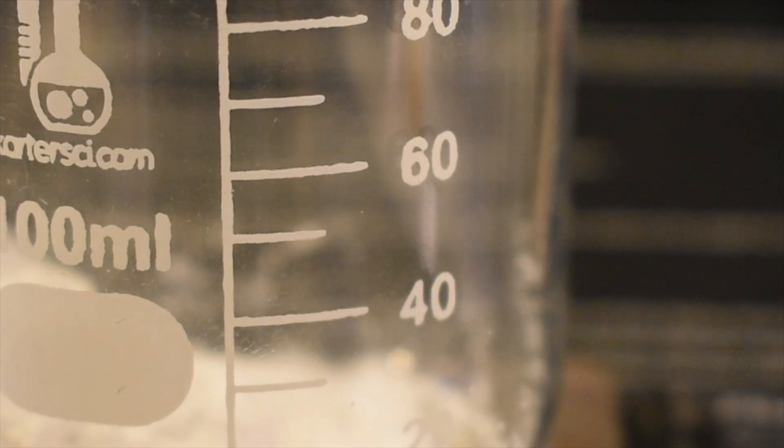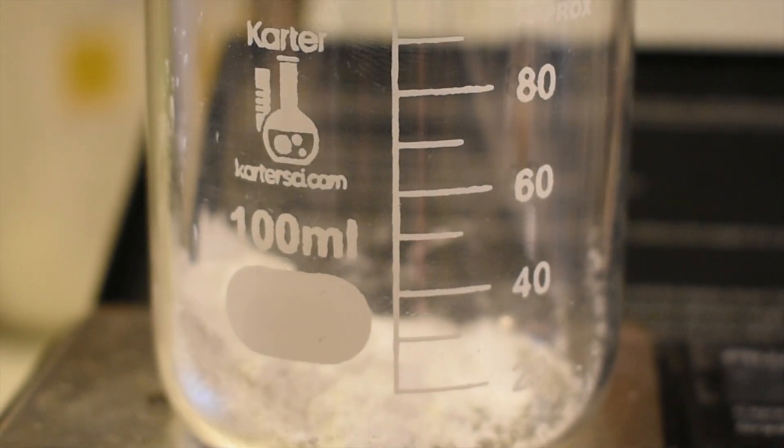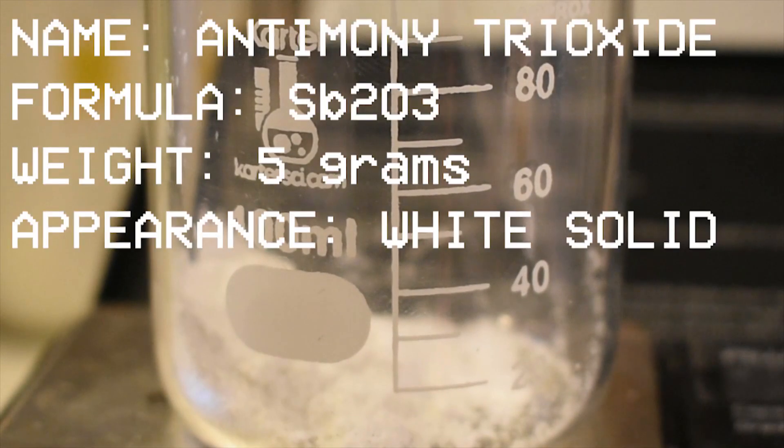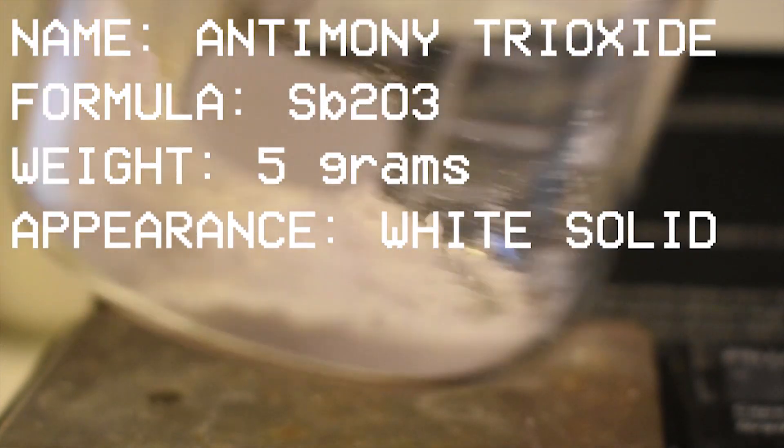So let's get started. To start out, I've weighed out 5 grams of antimony trioxide in a beaker right here. This is dry and I got this antimony trioxide from a pottery supply store.